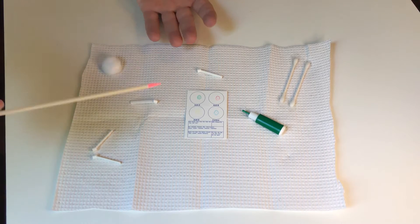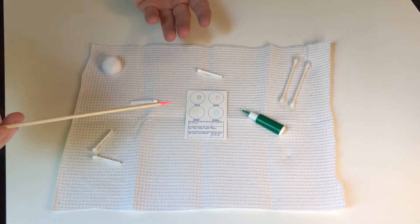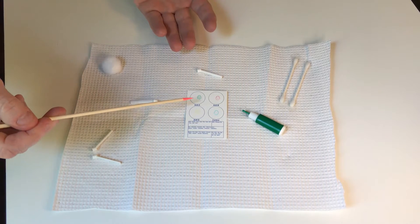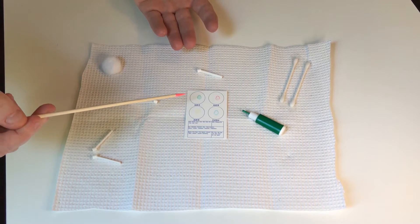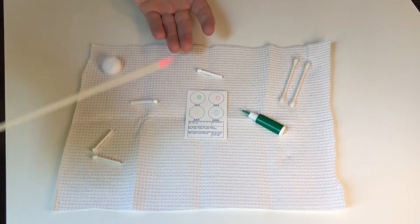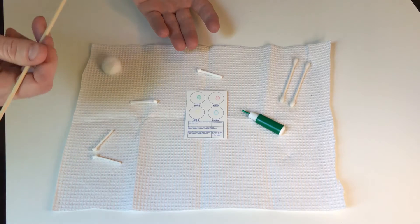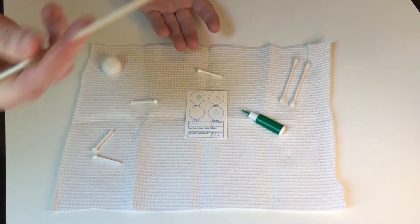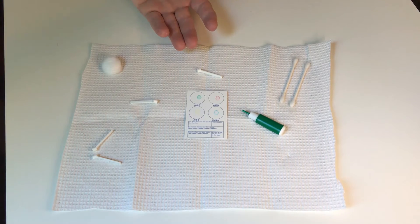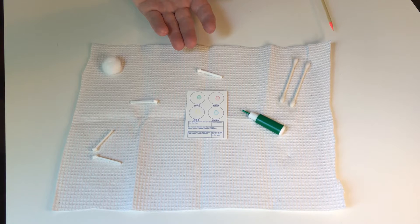Here we have a blood type test. I'm going to do it on myself. We have a card that already has four little circles on it, and each of these circles has an antibody to a particular antigen that is found on blood. It's a test to see if you've got the particular antigen.